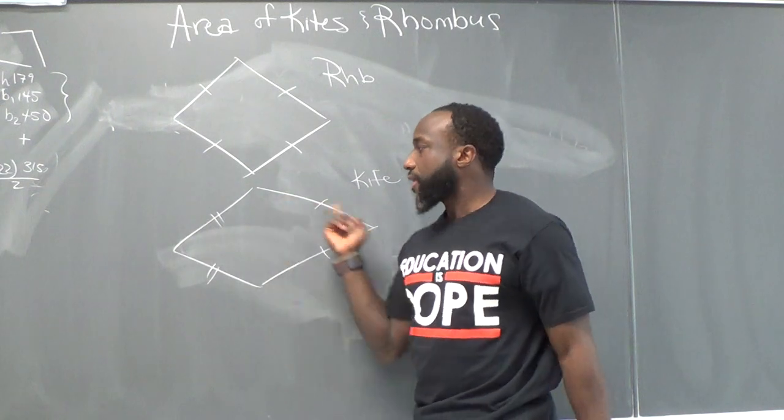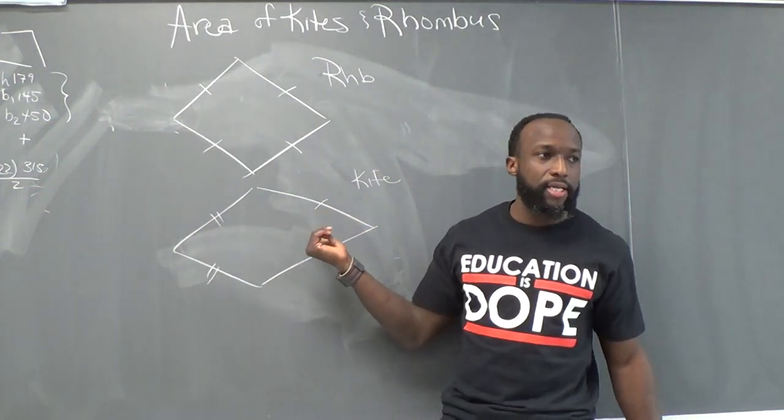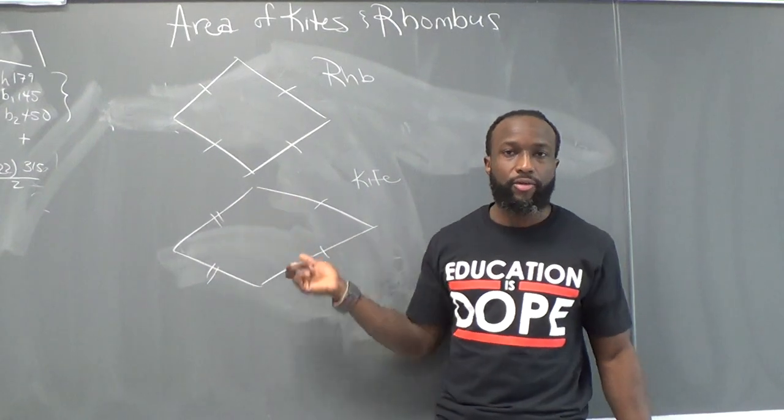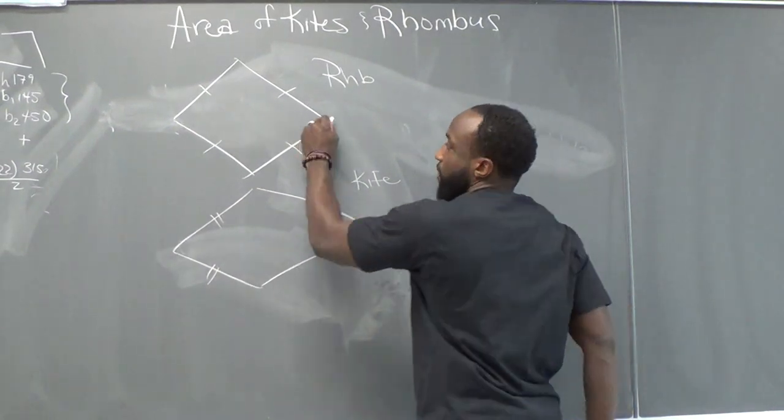This is a rhombus and this is a kite, right? So a kite, they have two pairs that are congruent, basically two pairs of sides that are congruent, okay? What about in a rhombus, all the sides are congruent?